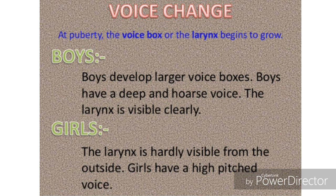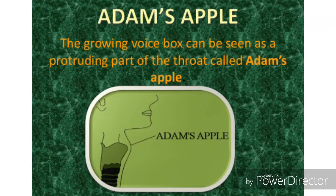Now let us learn about Adam's apple, which is seen in boys. The growing voice box or larynx can be seen as a protruding part of the throat; it is called Adam's apple. Adam's apple is actually a partial growth of our voice box or larynx, formed due to elongation of the thyroid cartilage.